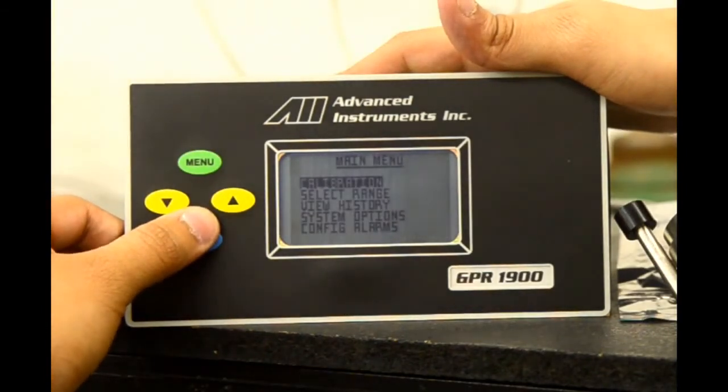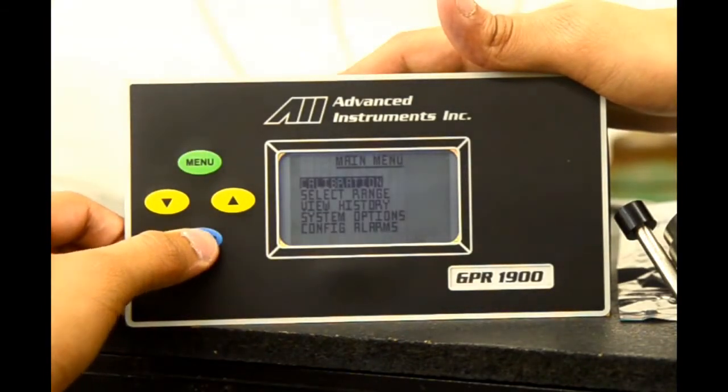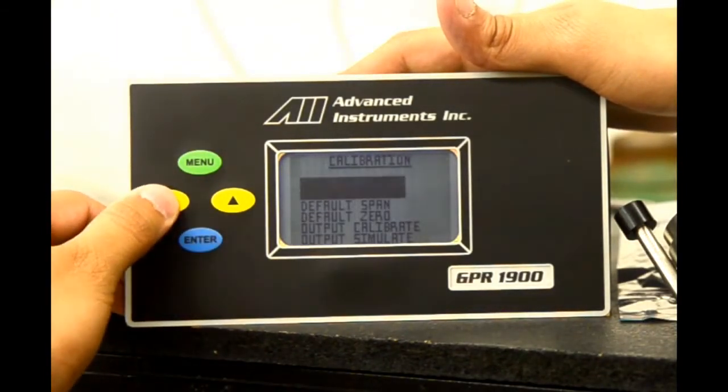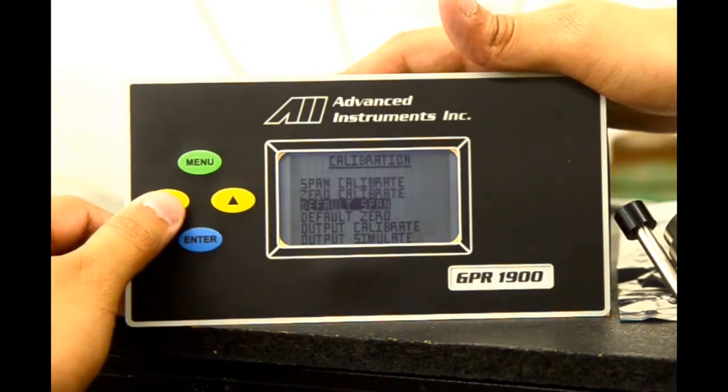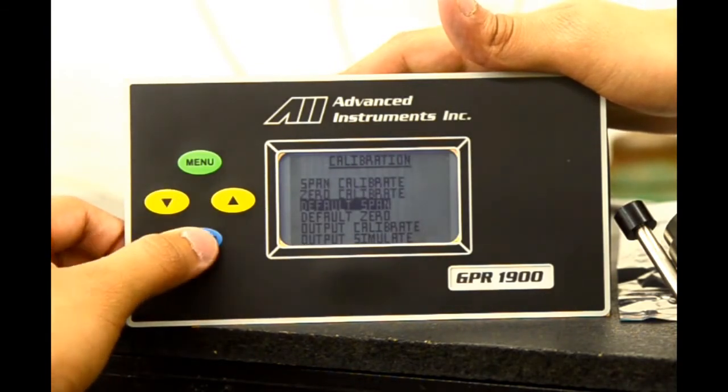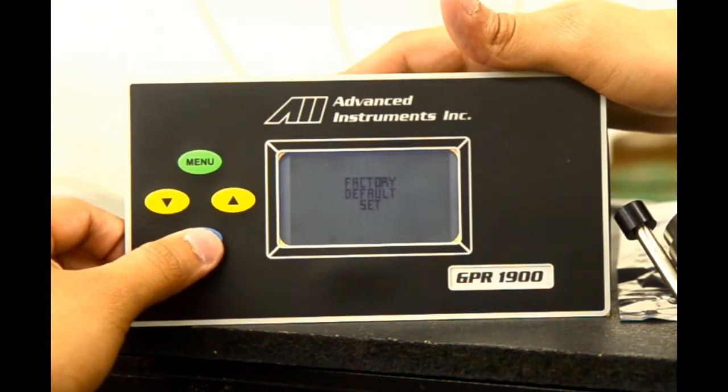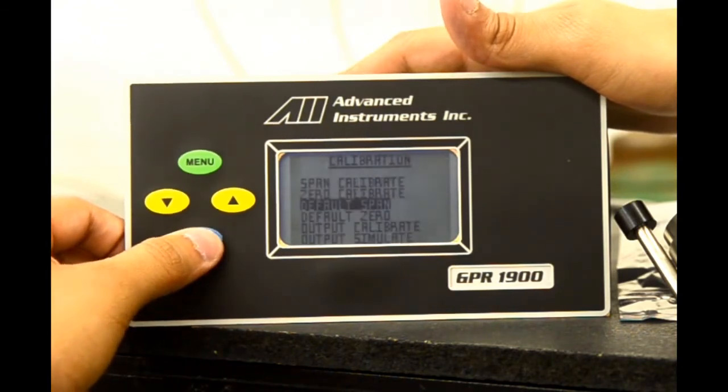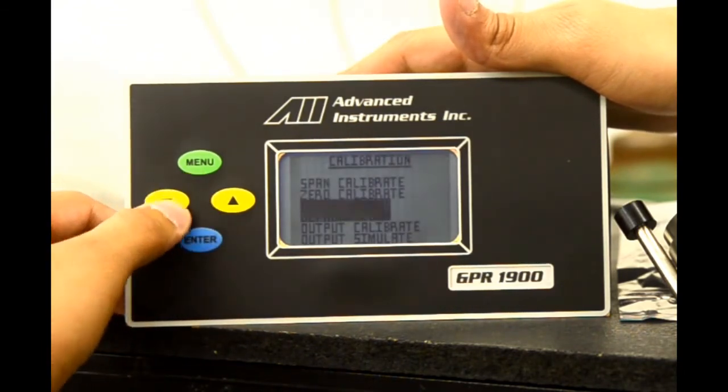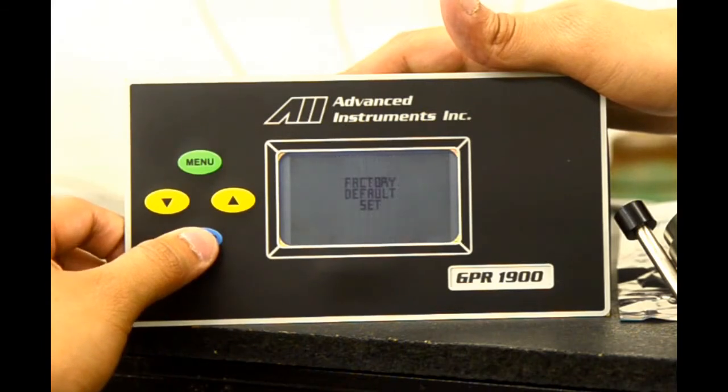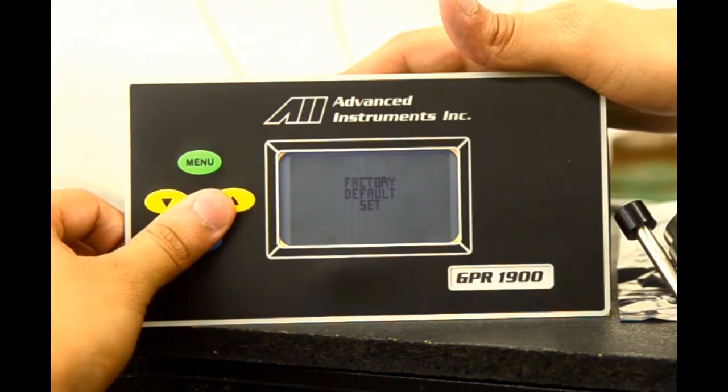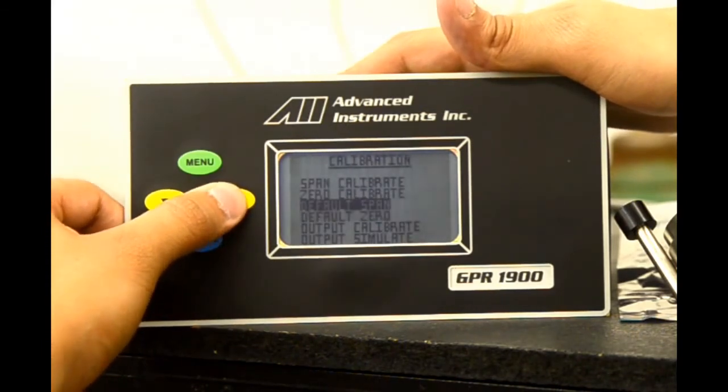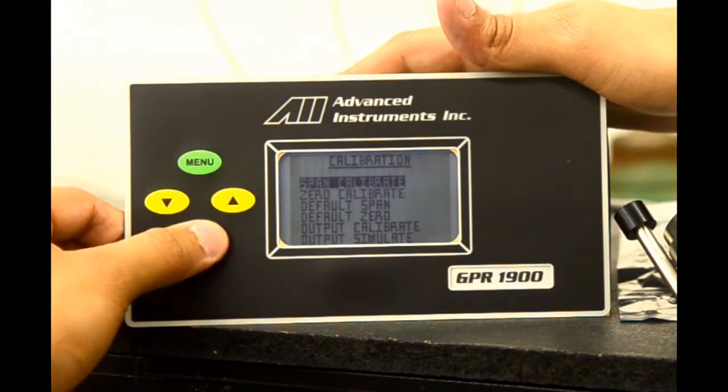We will now perform a calibration. We hit enter on the calibration menu. We'll be taken to the main calibration screen. We'll go down to default span and select enter. This will clear off any prior presets done on the calibration. And we do the same with default zero. As you can see, it will say factory default set. Once these are performed, we can scroll back up to span calibrate and select enter.